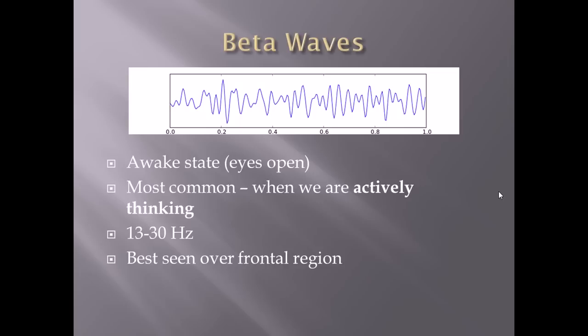Let's move on to beta waves. Beta waves differ from alpha waves in that they're closer together, meaning they have a higher frequency. You'll see beta waves at about a 13 to 30 hertz ratio. While alpha waves are seen in the awake state with eyes closed, beta waves are associated with eyes open and active thinking. Right now I'm thinking about giving a lecture, so I'm in a state of beta wave brain function. Beta waves are best seen over the frontal region of the brain.